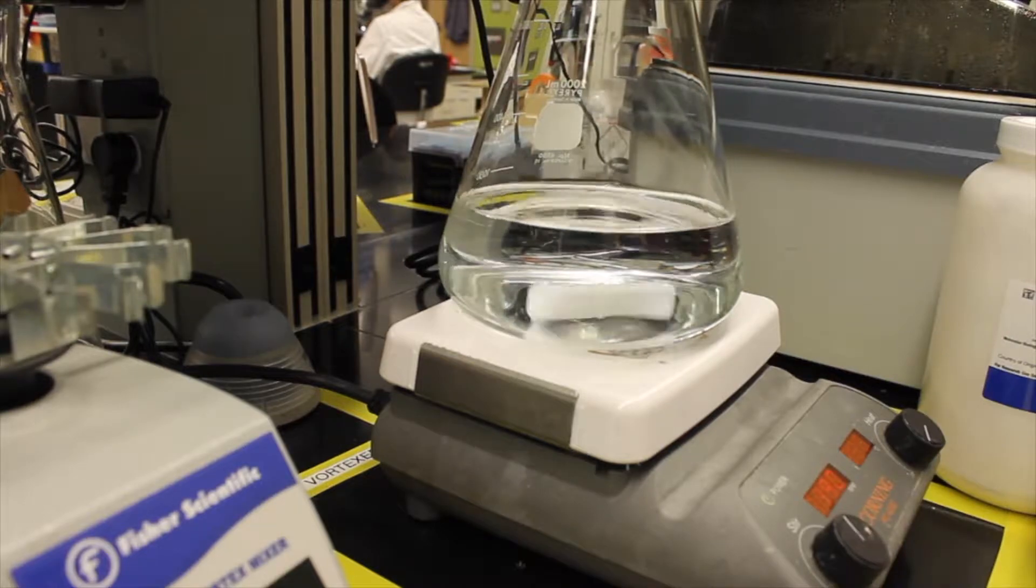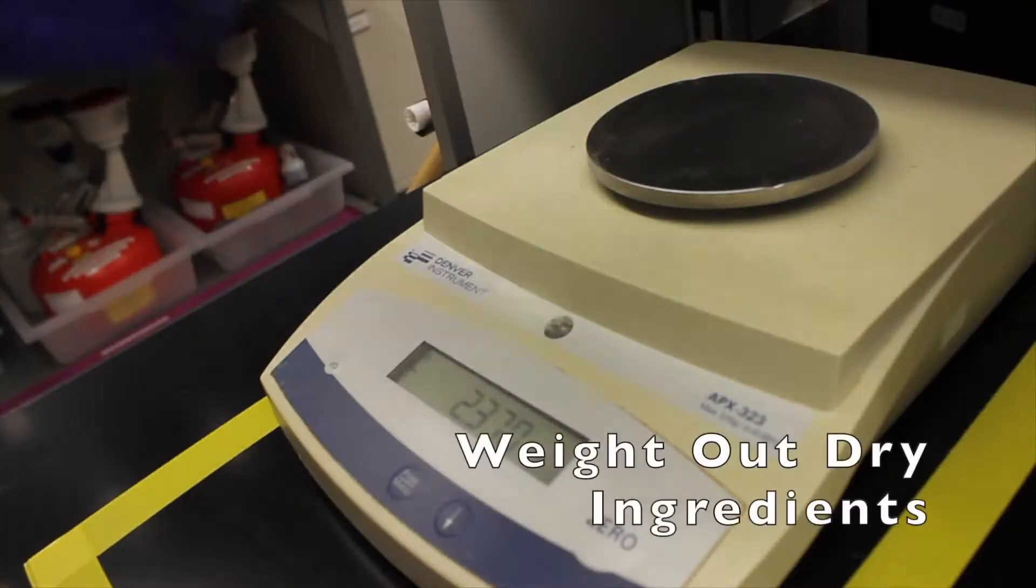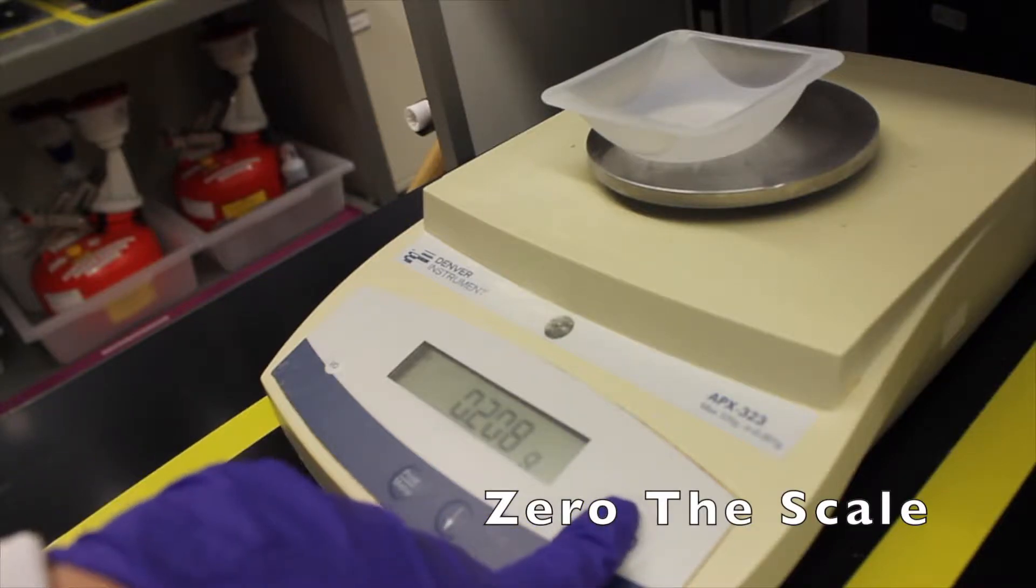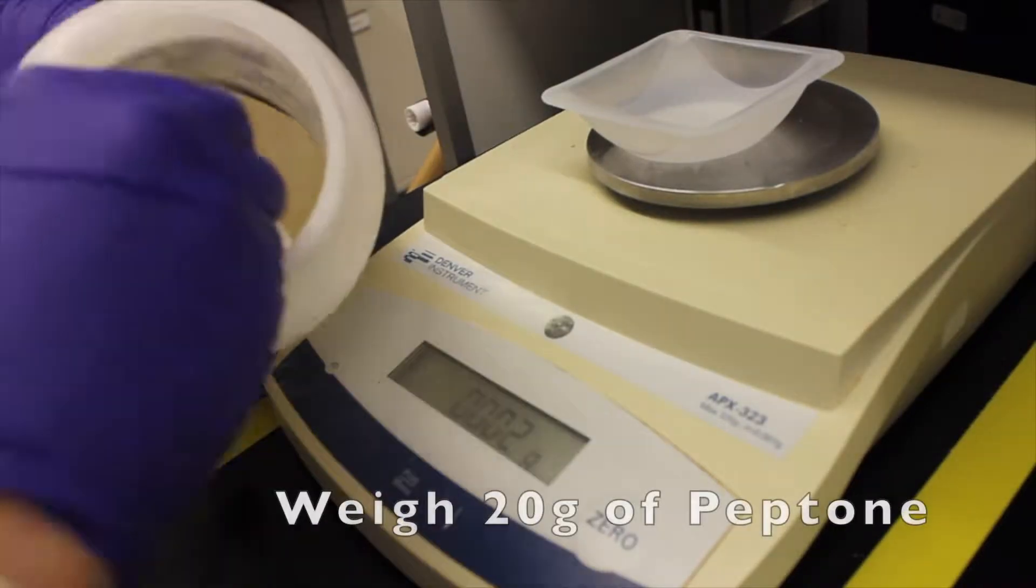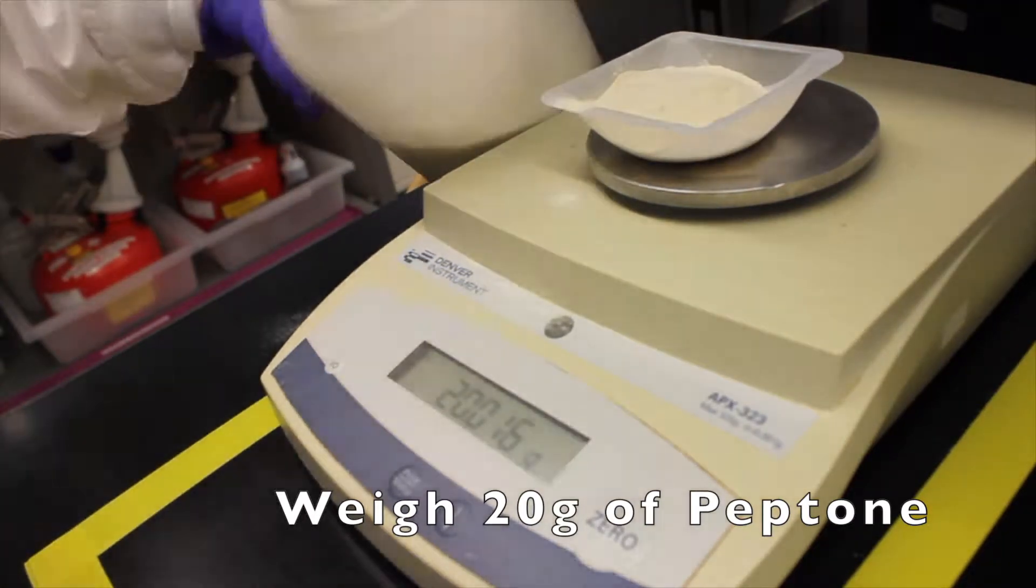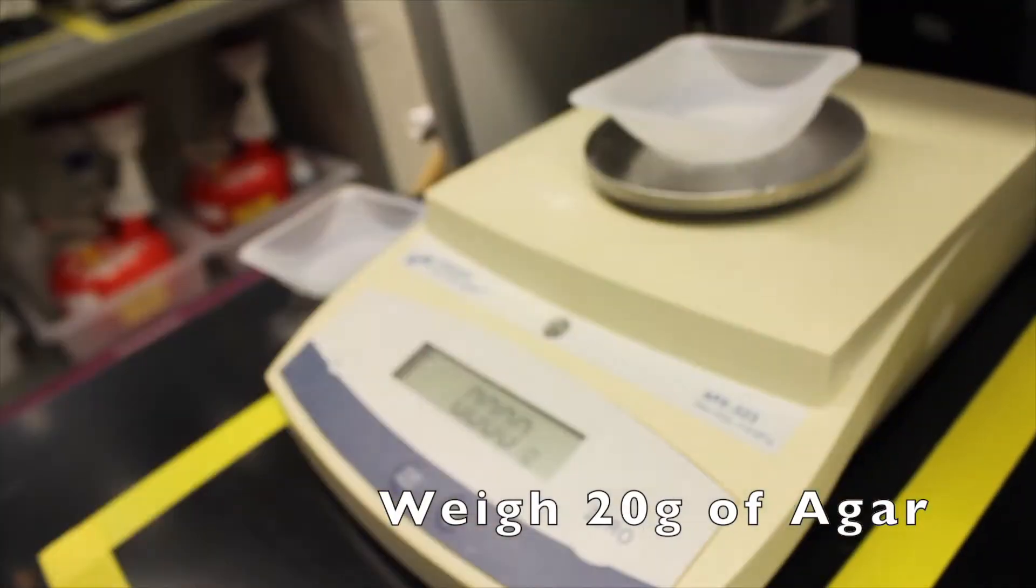We're going to weigh out our dry ingredients. Place the weigh boat on the kitchen scale and be sure to zero the scale. First, we're going to measure out 20 grams of peptone and then 20 grams of agar.